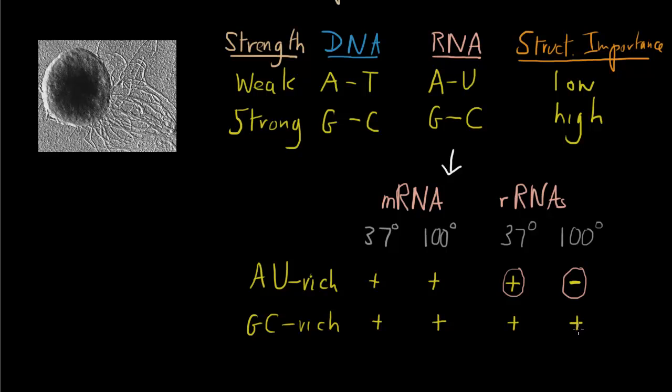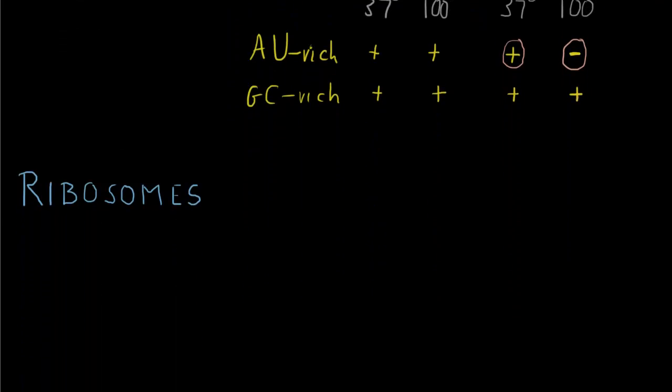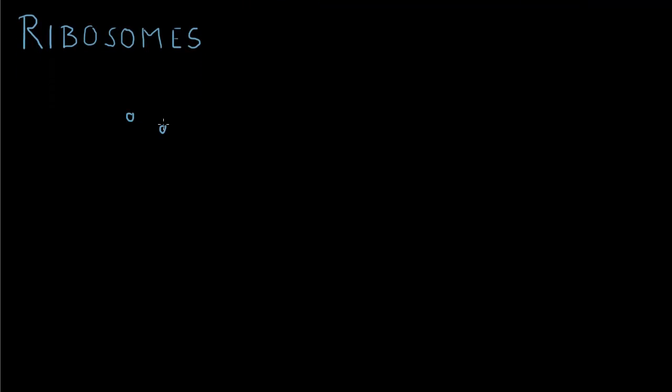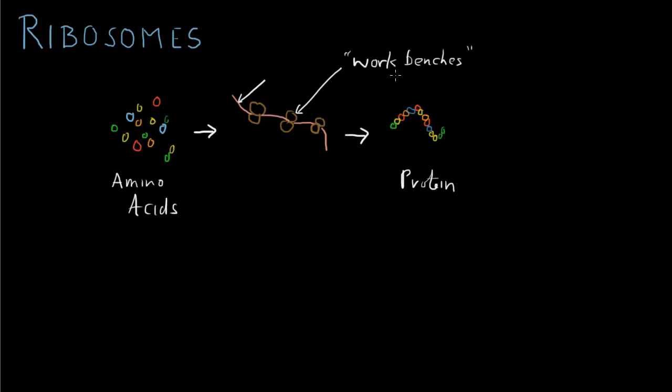Now, back to ribosomal RNA and your question about ribosomes. Here are some amino acids and the amino acids are joined together to make proteins. Ribosomes are the cytoplasmic particles that, largely by virtue of their complex structures, provide the work benches where proteins can be assembled, synthesized from their amino acid building blocks. Here you see ribosomes threaded together along a messenger RNA molecule.